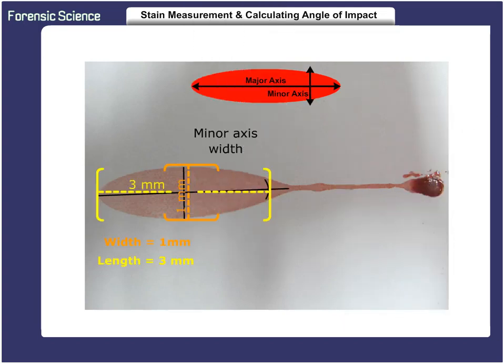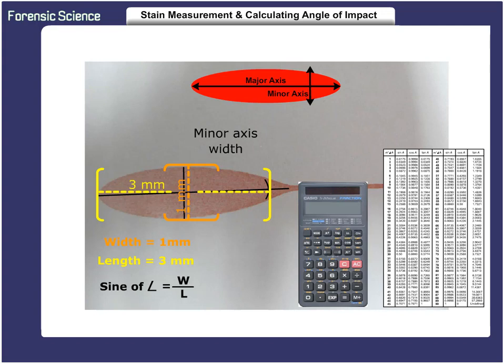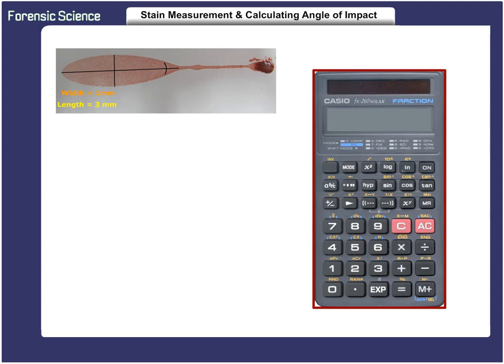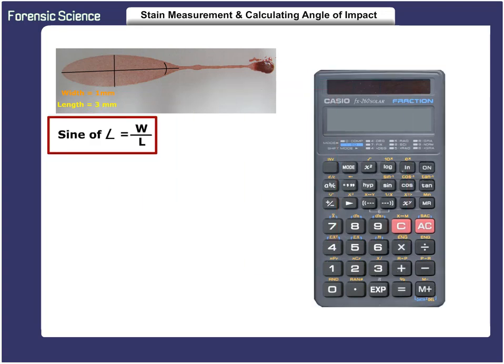With this information, we can determine the angle of impact using the formula: the sine of an angle equals the width divided by the length. We can calculate the angle by using either a scientific calculator or a trigonometric table. Next, we will use a scientific calculator to determine the angle of impact. The formula, as previously mentioned, is the sine of the angle equals the width divided by the length. The calculator must have the sine and inverse functions.